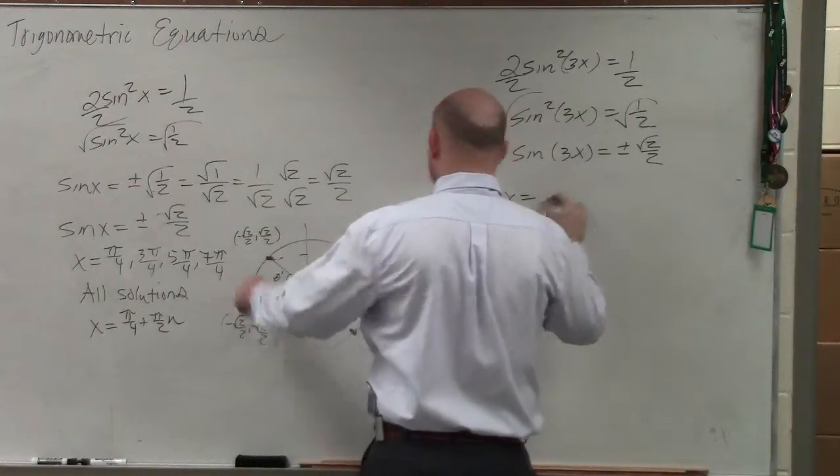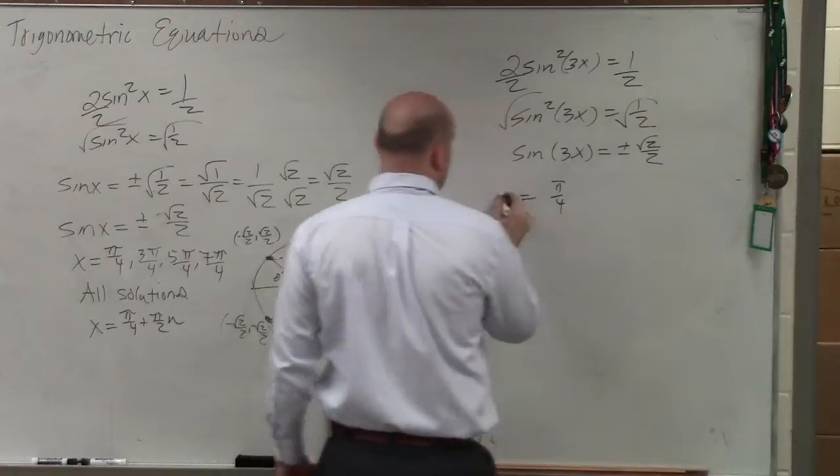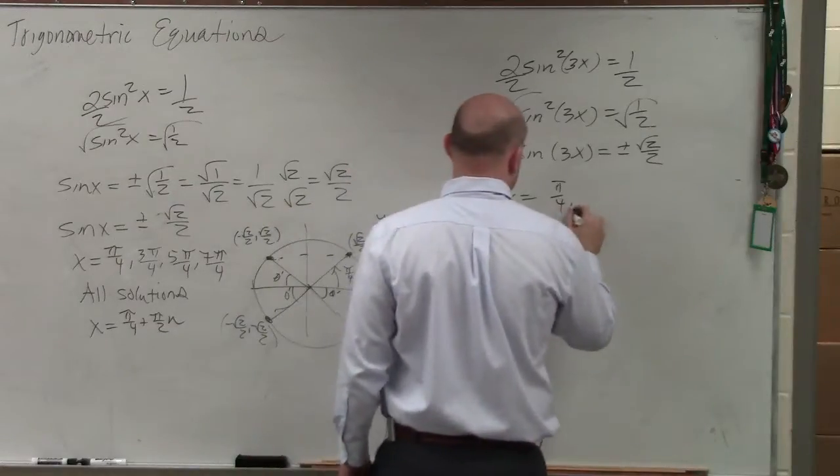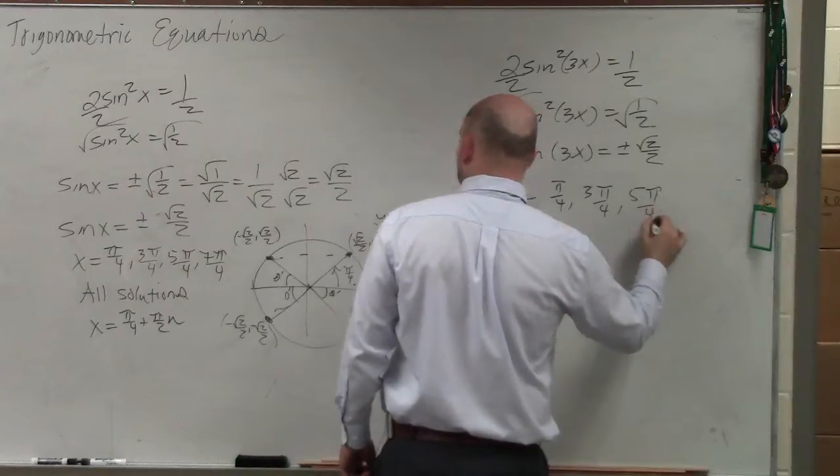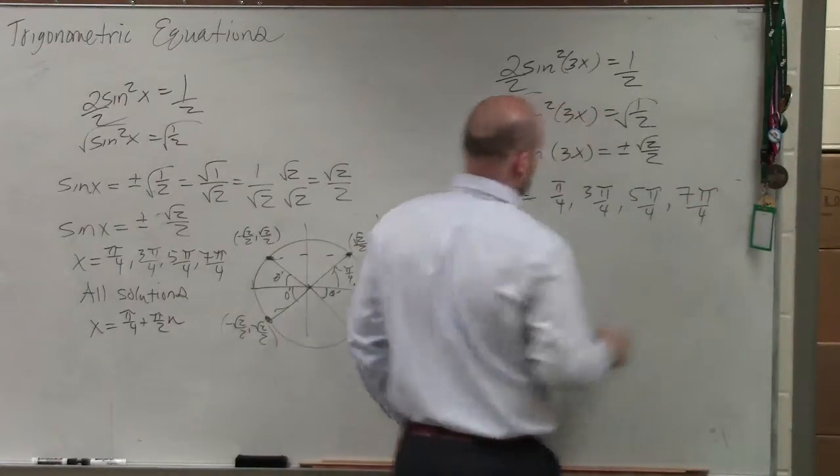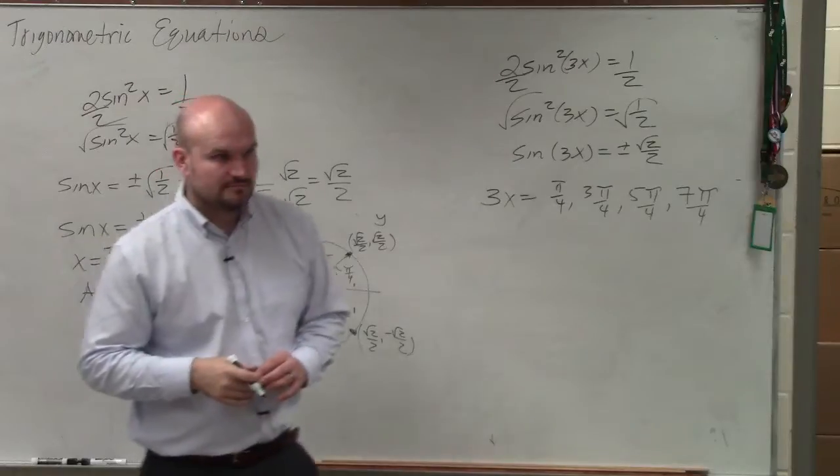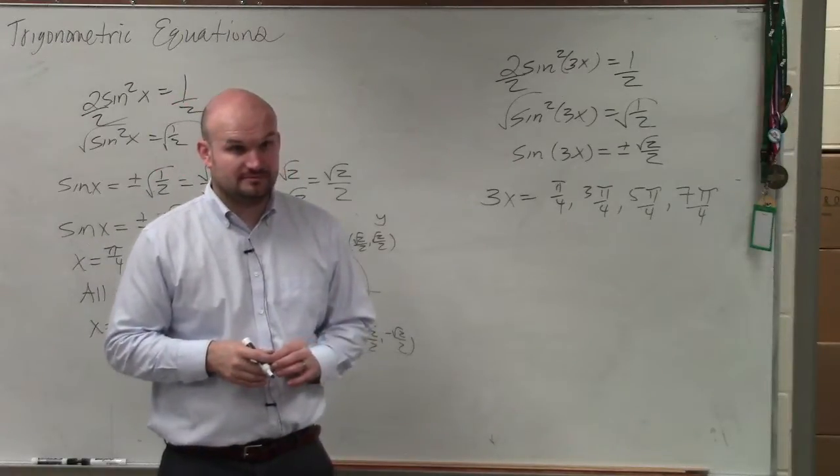So you could say 3x equals pi over 4, 3 pi over 4, 5 pi over 4, and 7 pi over 4. Right? Yes? Okay.